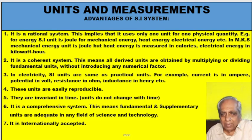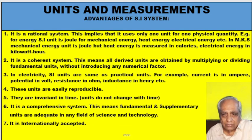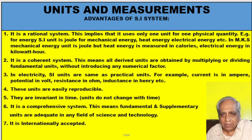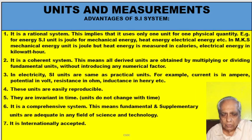SI system has been accepted throughout the world. The first advantage is that it is a rational system — the same physical quantity is not measured in various ways. For example, in SI, energy is measured in joule whether it is mechanical energy, heat energy, or electrical energy. In earlier times, mechanical energy was in joule, heat energy in calories, and electrical energy in kilowatt-hour. Now all types of energy are measured in joule — this is why it is called a rational system.